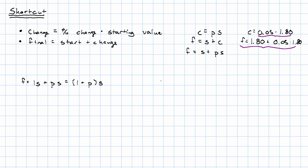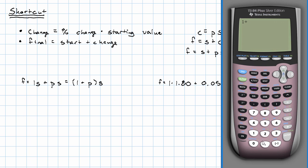In my specific problem, instead of saying 1 times $1.80 plus 5% times $1.80, I could have instead said 1 plus 5% times $1.80. Let's check and make sure that we still get the same answer. 1 plus 5% is 1.05 times $1.80, which really does give me that $1.89.